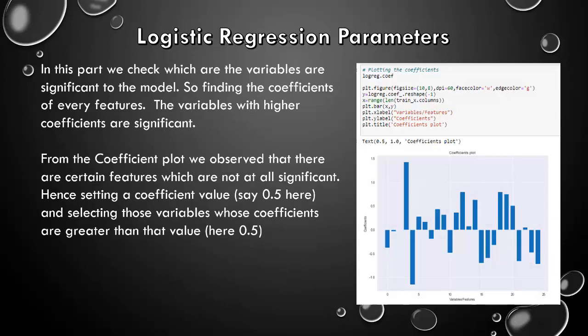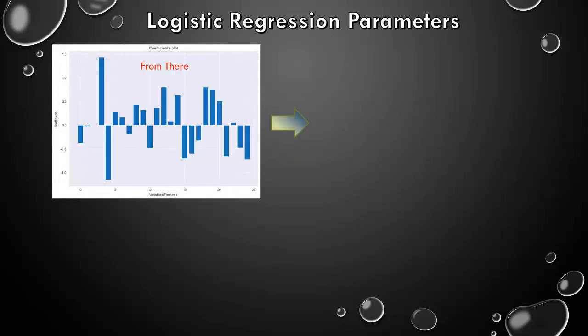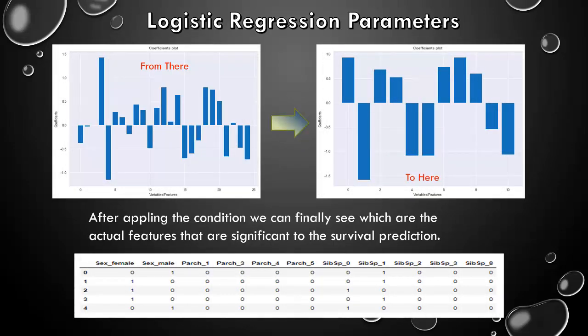Some logistic regression parameters. This is an important part. In this part, we check which of the variables are significant to the model. So, finding the coefficients of every feature. The variables with higher coefficients are significant. From the coefficient plot, as we can see on the right side, we observe that there are certain features which are not at all significant. Hence, setting a coefficient value say 0.5 here and selecting those variables whose coefficients are greater than that value, that is 0.5. So, from here to here, we can see how the variables have reduced and the important or the significant variables or features are present.